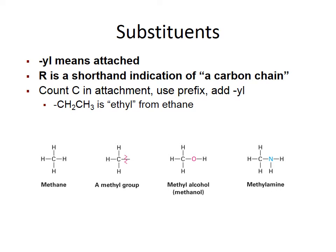Not all alkanes are straight chain — just carbons in a row. Sometimes they have branches on them, and we call these branches substituents. The substituent always has an 'yl' ending, meaning it's something attached. So if we look at methane, it's one carbon — we use the prefix 'meth' and the 'ane' ending for the alkane itself. But if we attach it to something, we call it 'meth' for one carbon plus 'yl' because it's attached — so methyl.